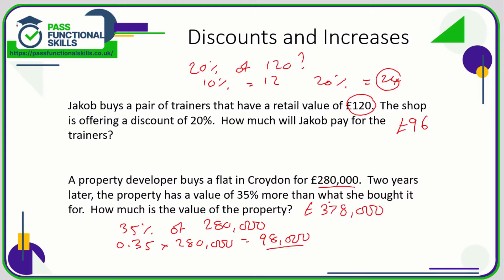If you're good with your percentage increases, since this is increased by 35%, instead of working out 35% and adding it on, instead of using the basic percentage multiplier 0.35, we can use the multiplier for a percentage increase — which is adding 1 to the basic percentage multiplier. So instead of 0.35, if we multiply by 1.35, we'll go directly to the final answer of £378,000.